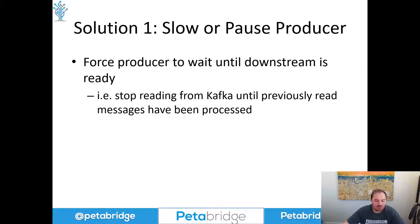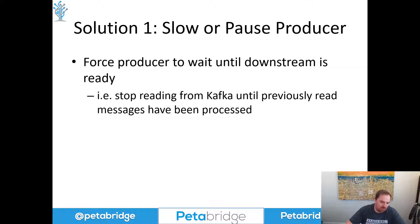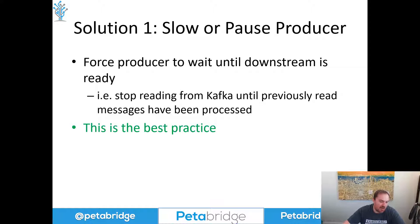Once that backlog is clear, we'll go ahead and begin reading from Kafka again. This gives you a little bit of vertical load balancing — the bottom consumer of your application, which is the point of bottleneck in your system, is able to tell the faster-running producer, I need you to adjust until I'm ready. This is the best practice and ultimately the best way to implement backpressure support.